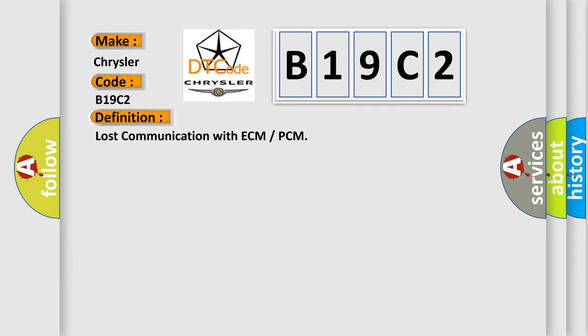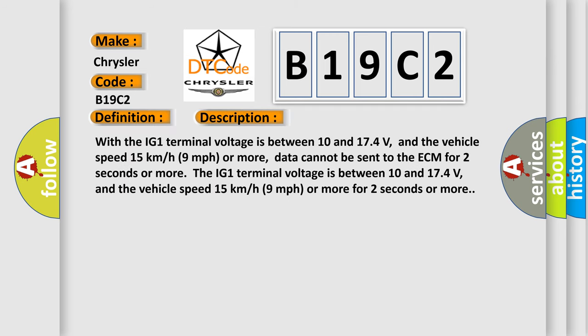And now this is a short description of this DTC code. With the IG1 terminal voltage between 10 and 17.4 volts, and the vehicle speed 15 km/h or 9 mph or more, data cannot be sent to the ECM for 2 seconds or more.